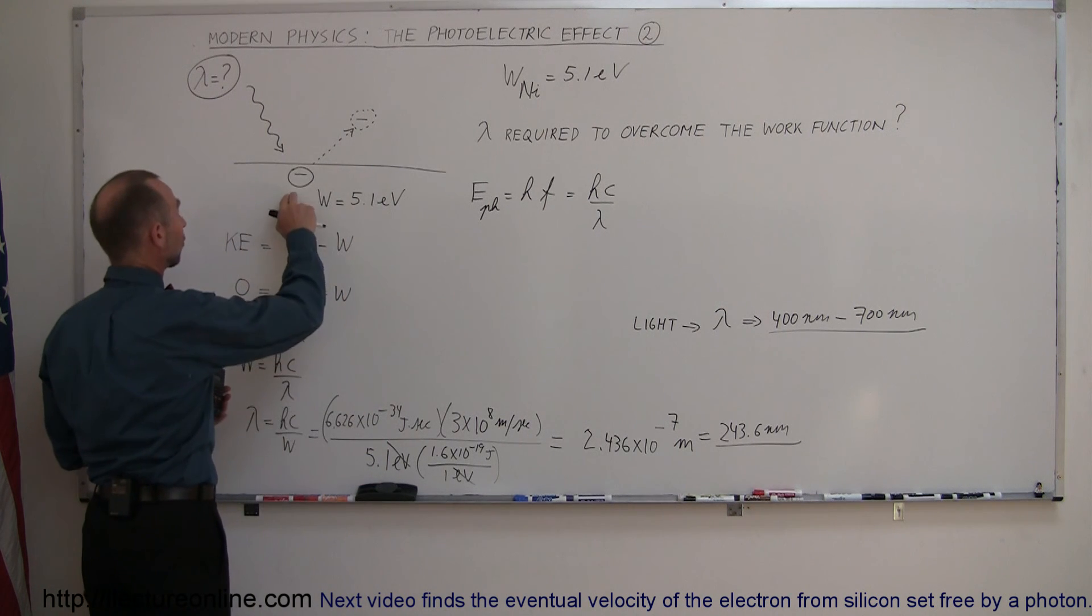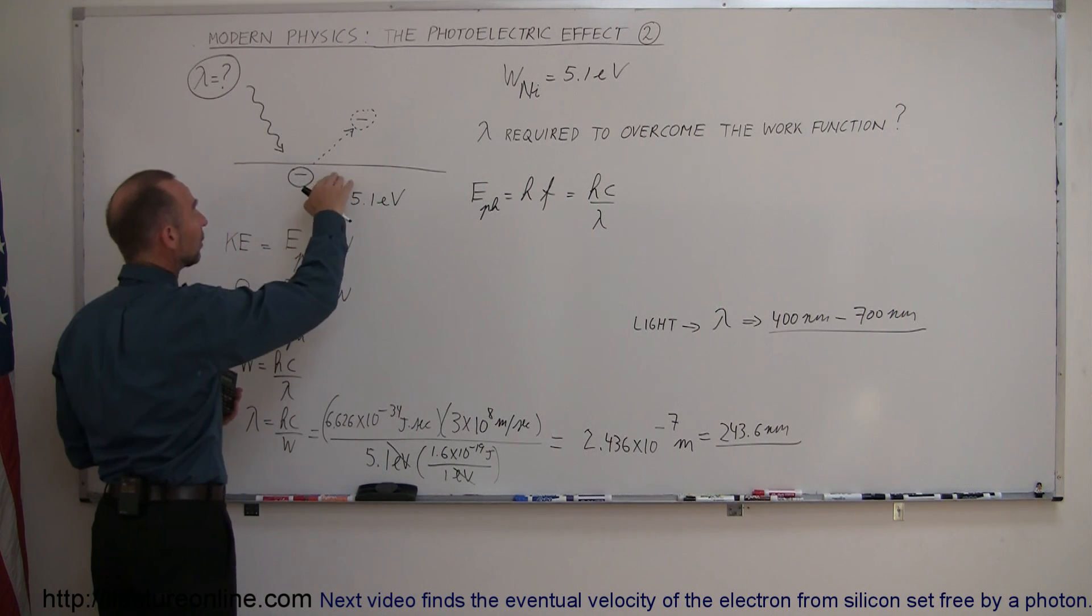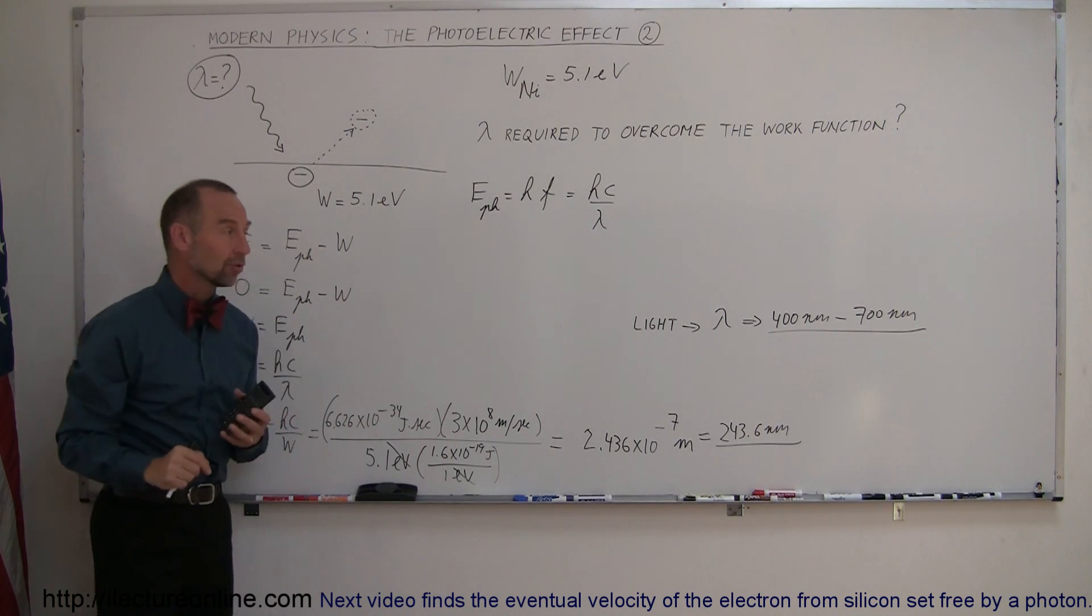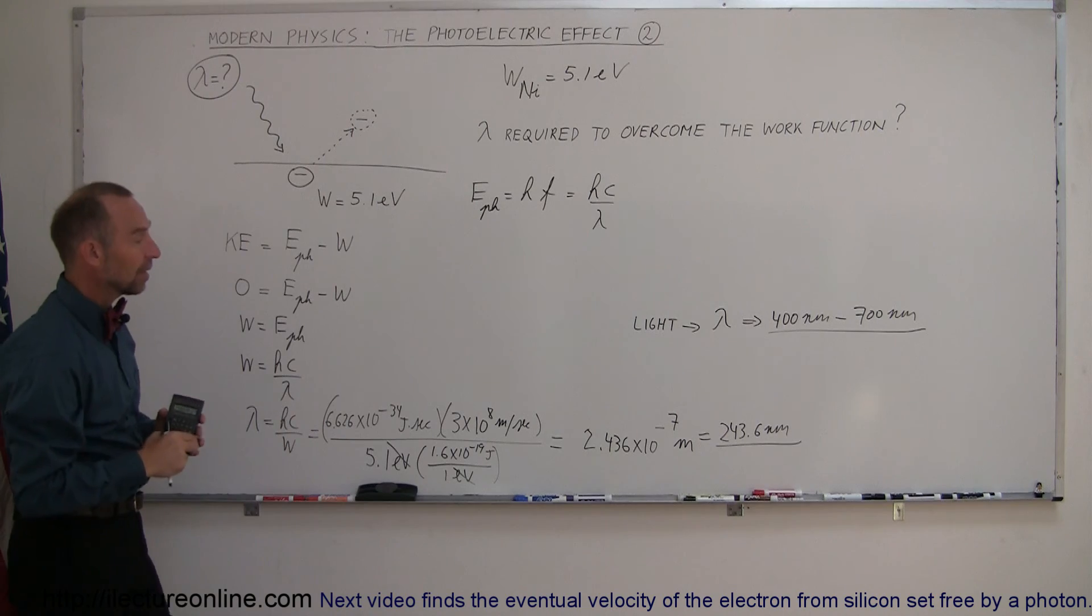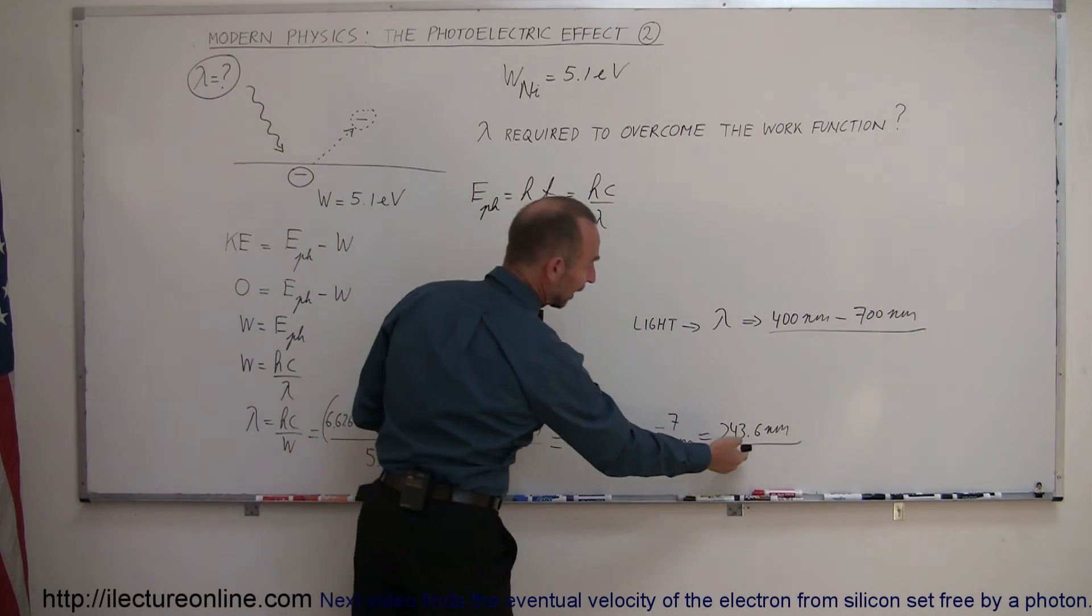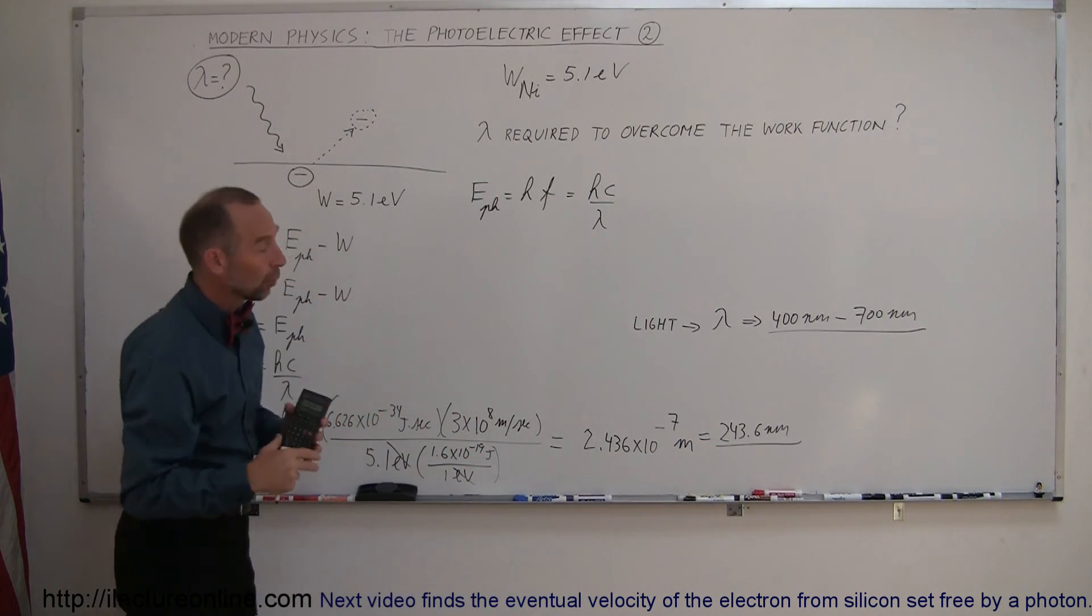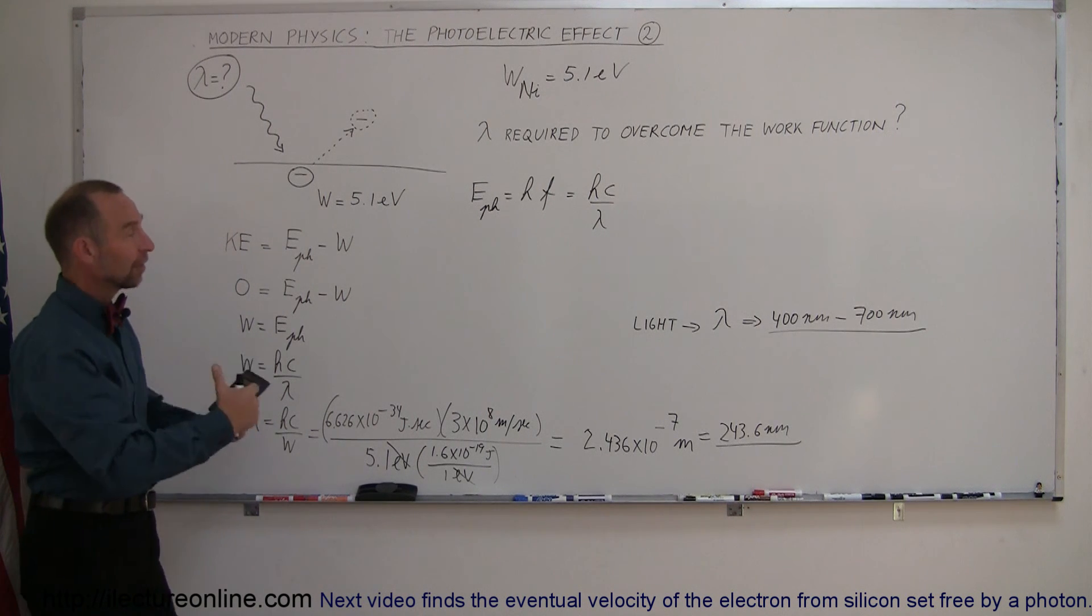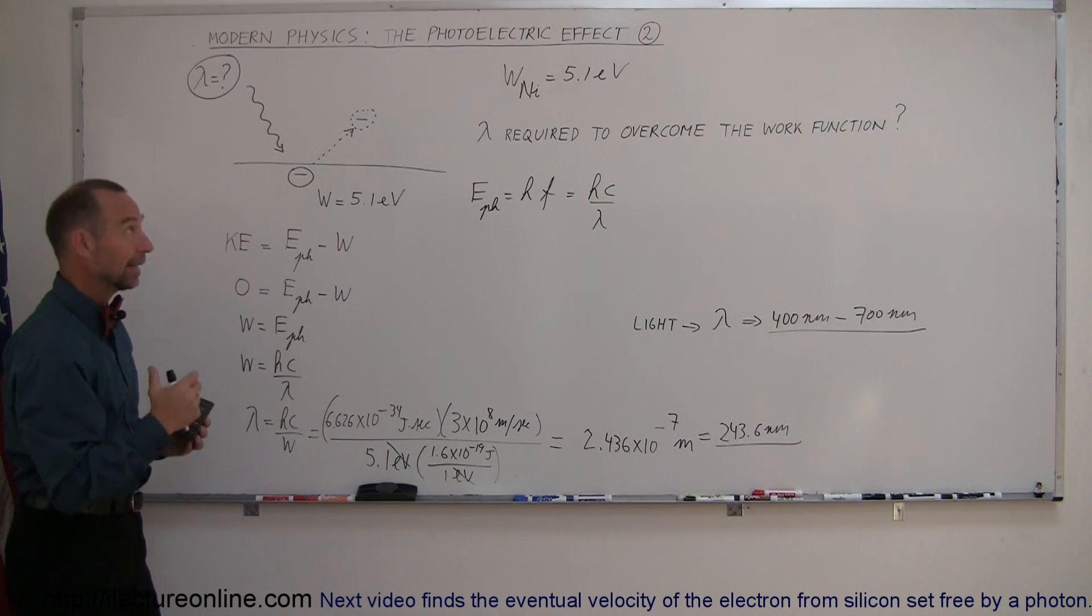which means for electrons to be jumping free out of nickel, it has to be struck by light in the ultraviolet range, and for this particular case, we can see that the minimum wavelength or the maximum length of the wave can be 243.6 nanometers or below that for having enough energy to set electrons free, and that's how you do that.